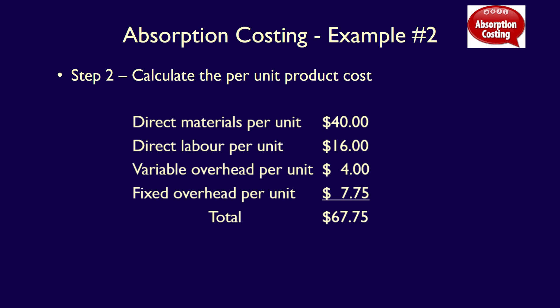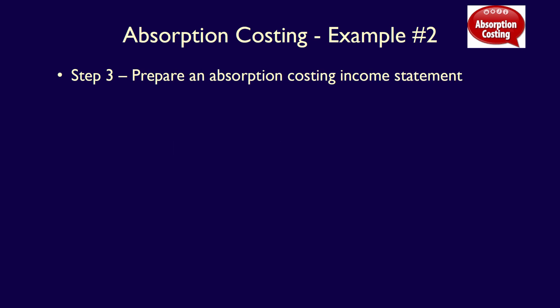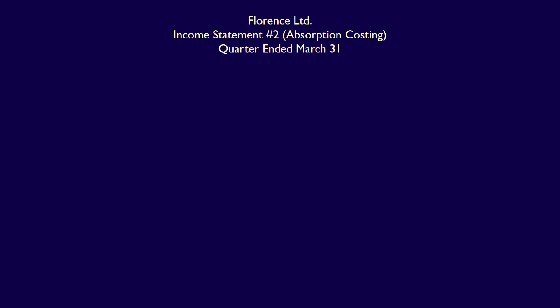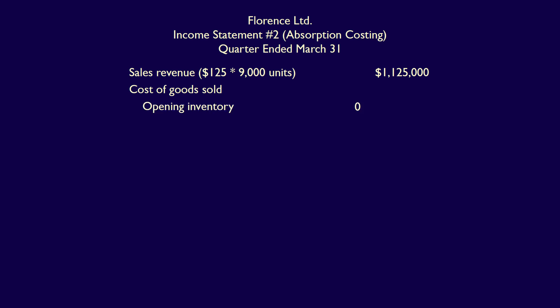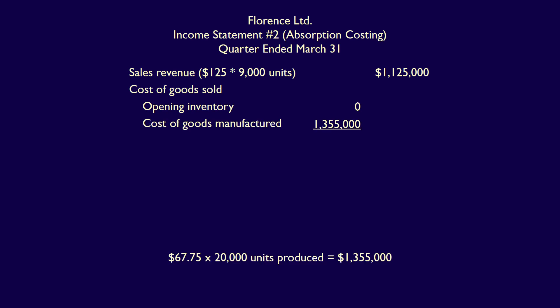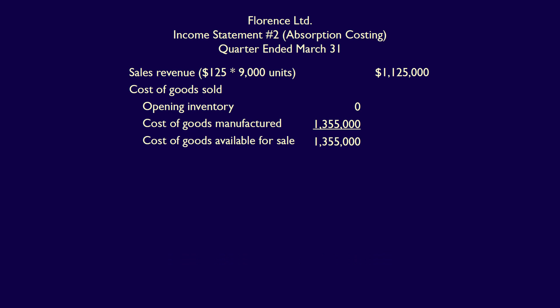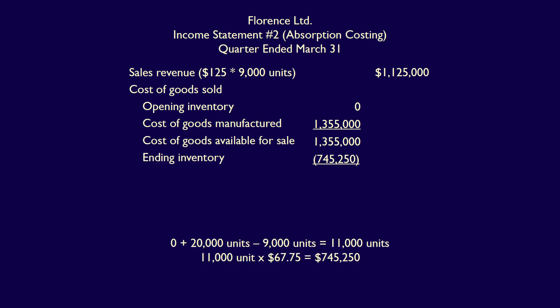This per unit cost will be used to determine both the cost of goods sold and the value of ending inventory. Step three is to prepare an absorption costing income statement — Florence Limited, Income Statement Number Two, Absorption Costing, Quarter Ended March 31st. Sales revenue is $125 per unit multiplied by 9,000 units sold, equal to $1,125,000. For cost of goods sold, opening inventory is zero. We add cost of goods manufactured: $67.75 per unit multiplied by 20,000 units equals $1,355,000. Cost of goods available for sale is $1,355,000.